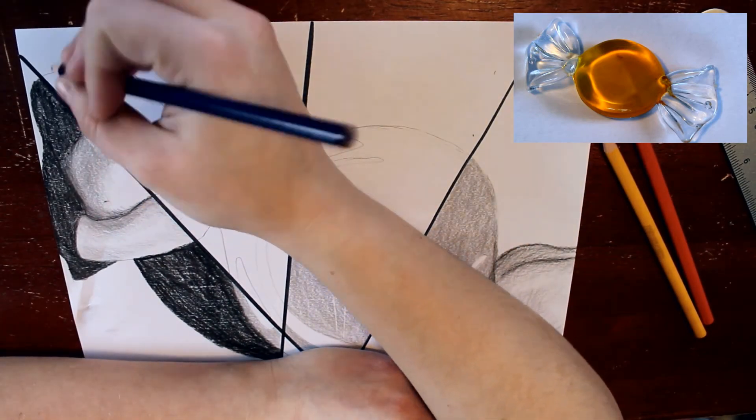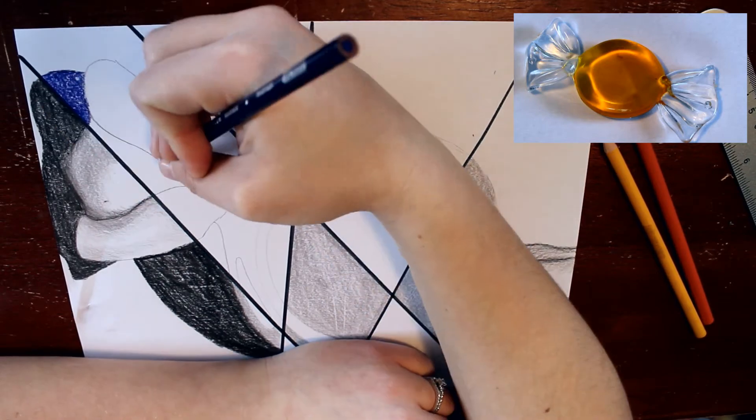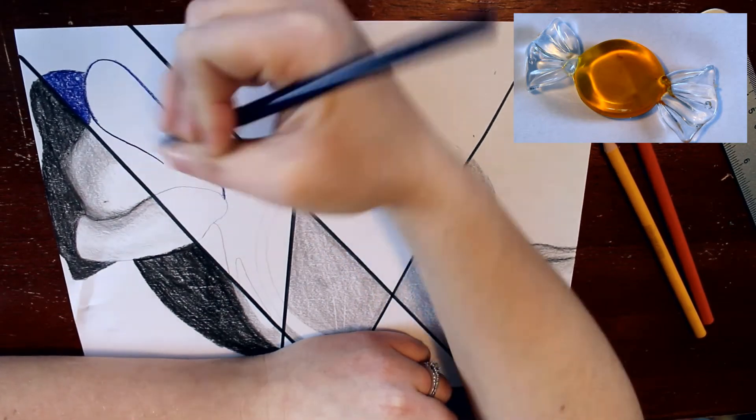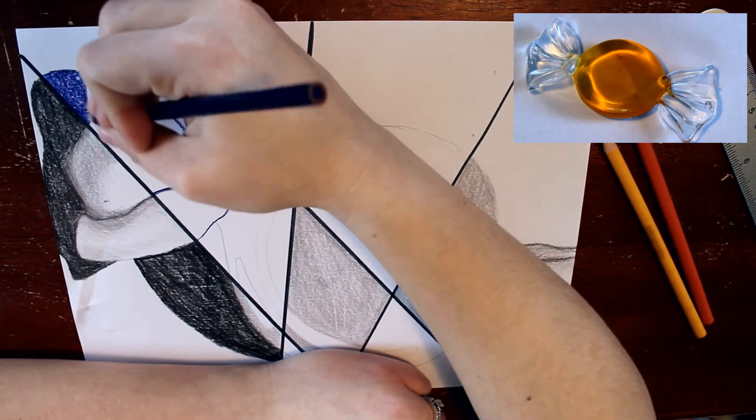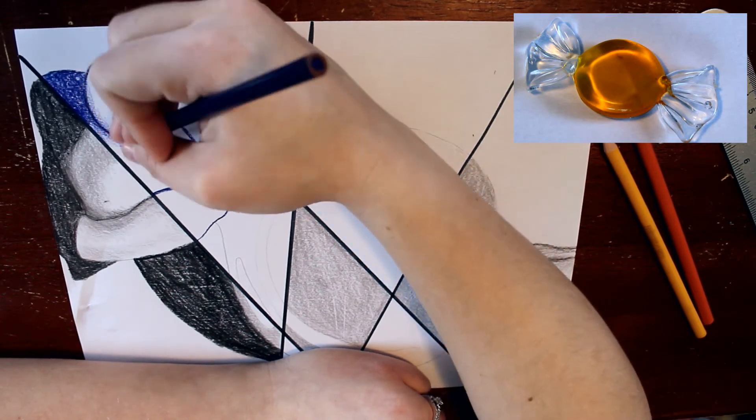Now for the rest of our sections we're going to be using color. This will be contrasting against the black and the white areas really well because we have really bright pops of color.